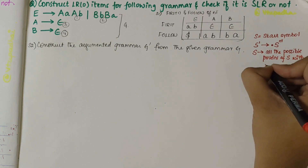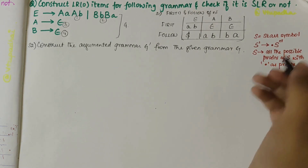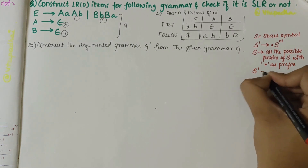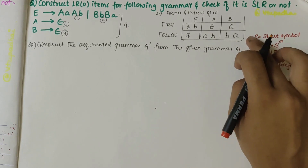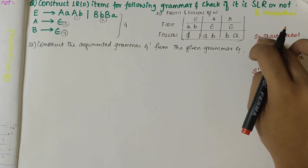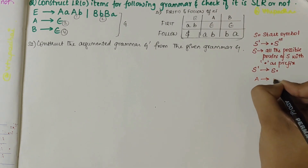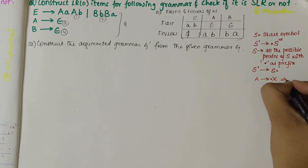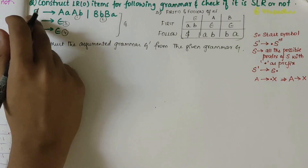Over each iteration, by shifting, I should ultimately obtain S' → S•. This is in the case where S is a non-terminal start symbol. If I have any production of the form A → X, then initially I should put the dot at the start and finally I should obtain A → X•.